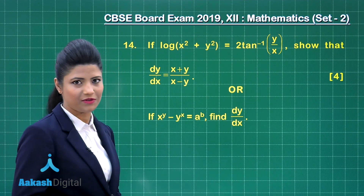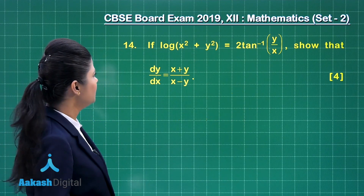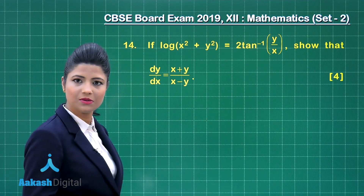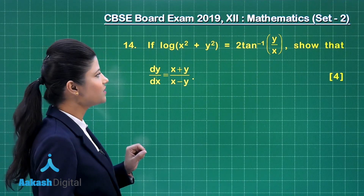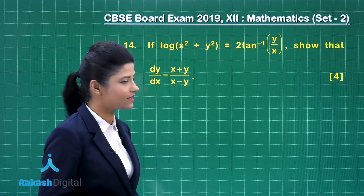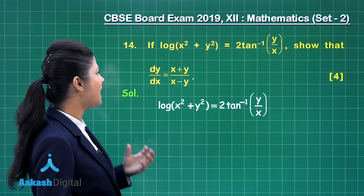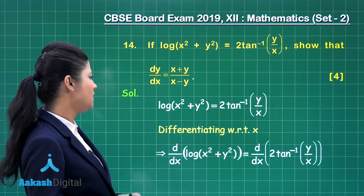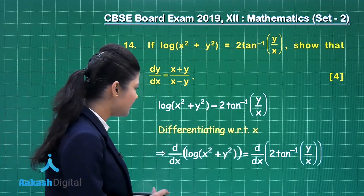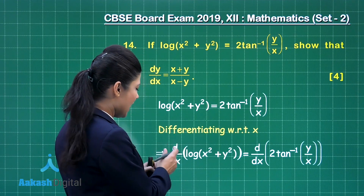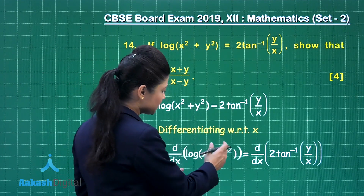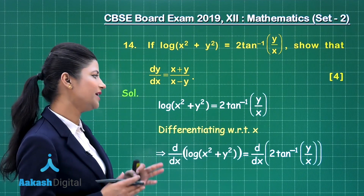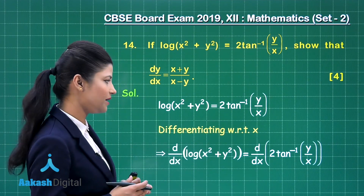Let us discuss the first choice of this question. Here it is provided that log of x squared plus y squared is equal to twice of tan inverse y upon x. Let us take this condition and differentiate both sides with respect to x. When differentiating both sides with respect to x, you have d/dx of log of x squared plus y squared, and you have to differentiate twice of tan inverse y upon x.